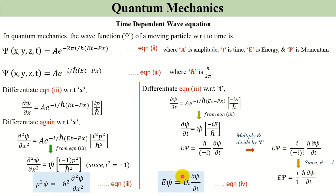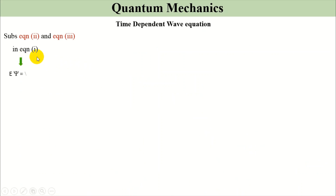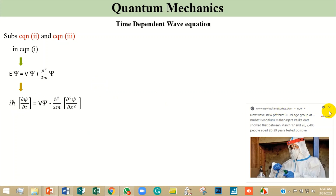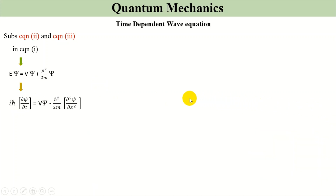Now we have the Eψ term (equation four) and the p²ψ term. We substitute these into equation one: Eψ = Vψ + p²ψ/2m. Substituting Eψ = iℏ ∂ψ/∂t and p²ψ = −ℏ² ∂²ψ/∂x², we get: iℏ ∂ψ/∂t = Vψ − ℏ²/2m · ∂²ψ/∂x².